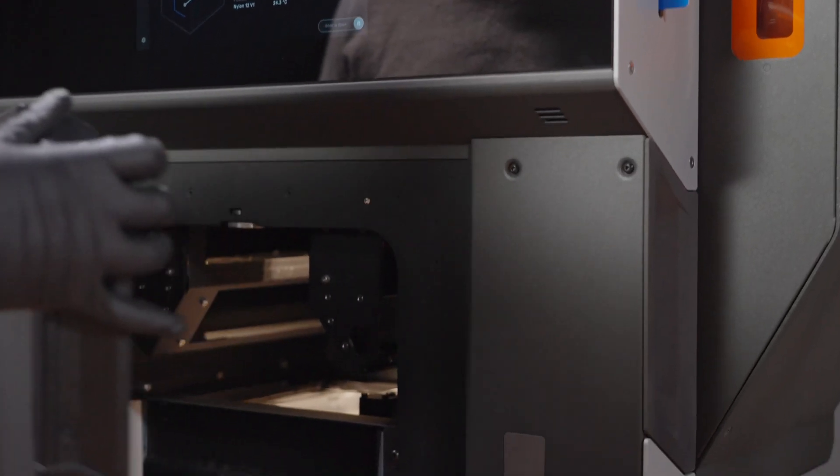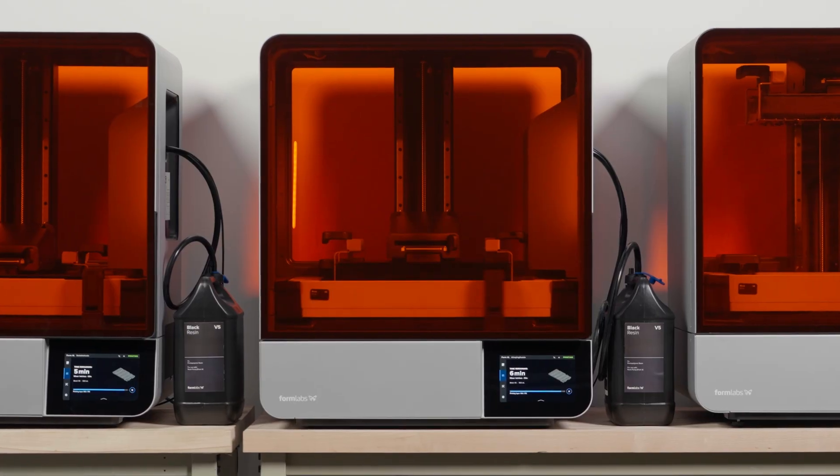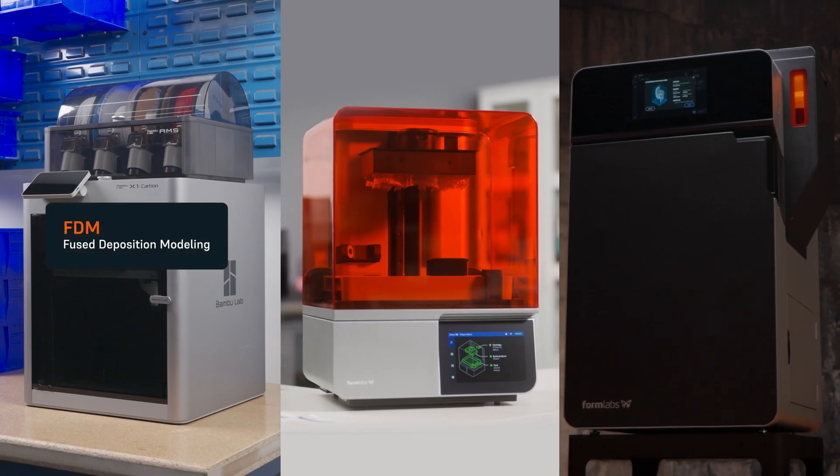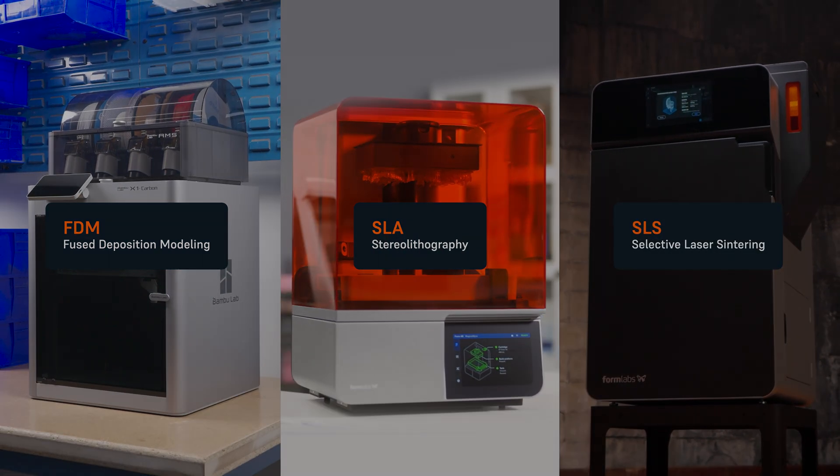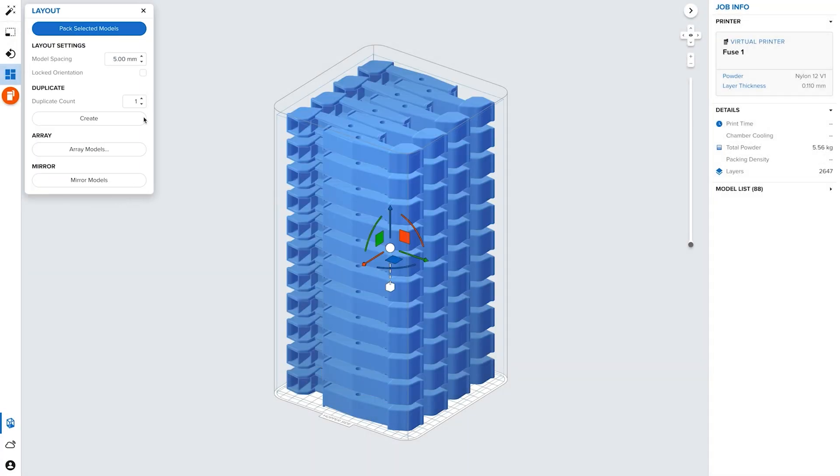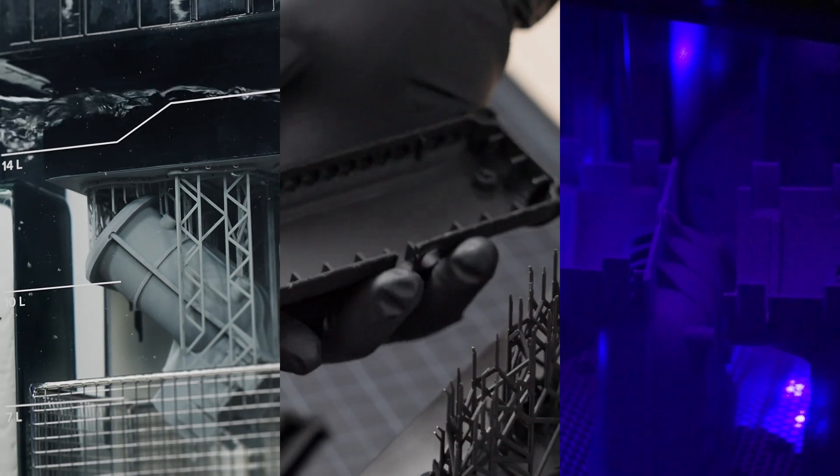In this video, we'll compare the workflow and ease of use of the most common plastic 3D printing technologies: FDM, SLA, and SLS, starting with design and print preparation, to machine setup, 3D printing, and all the way through post-processing.